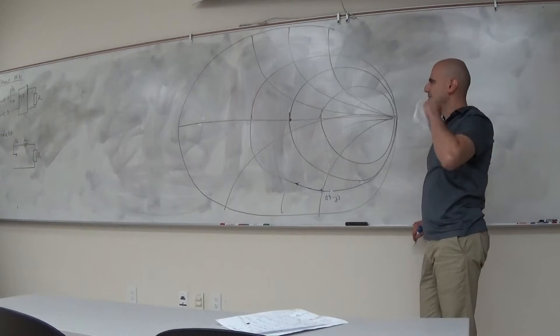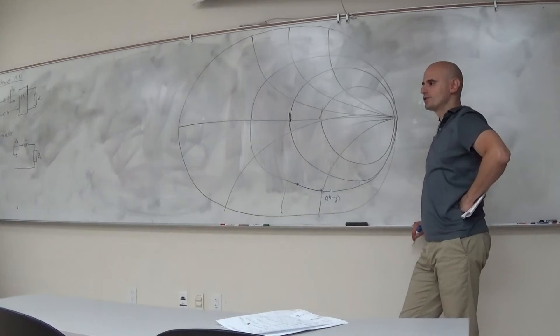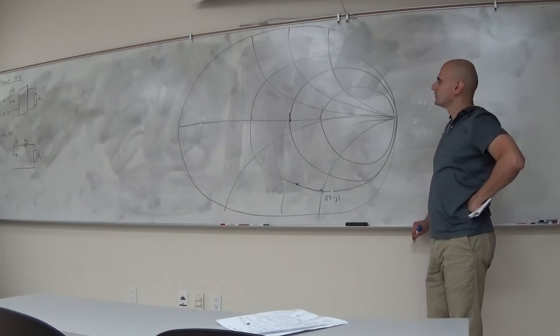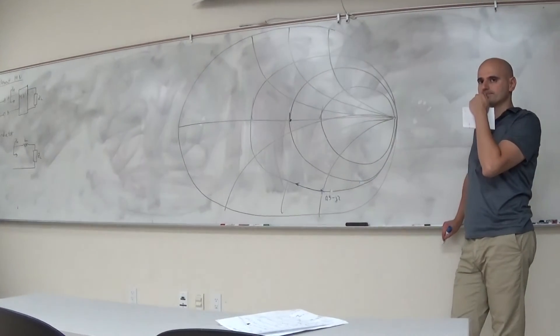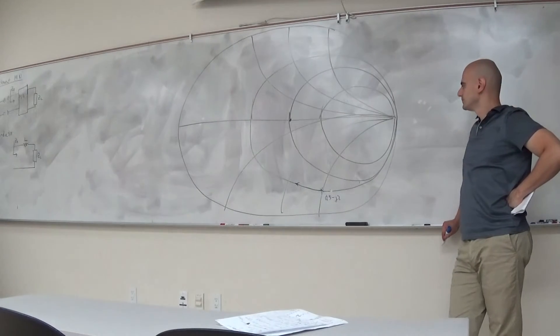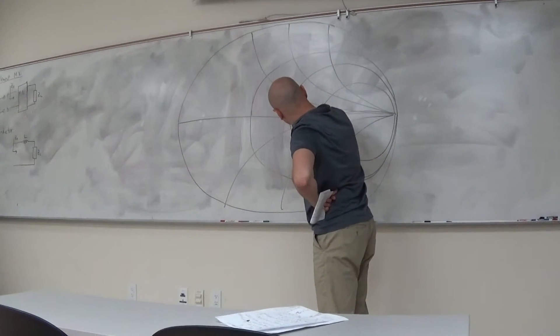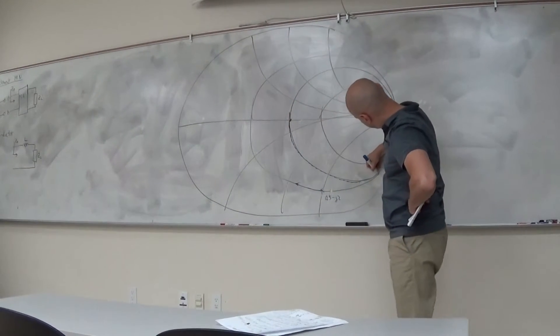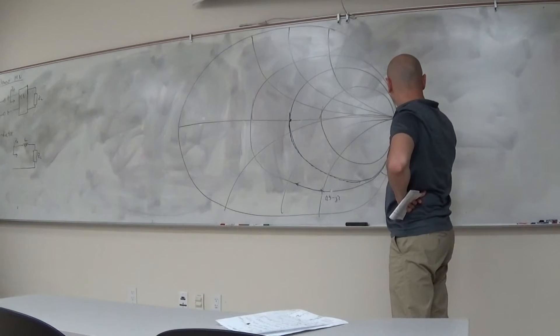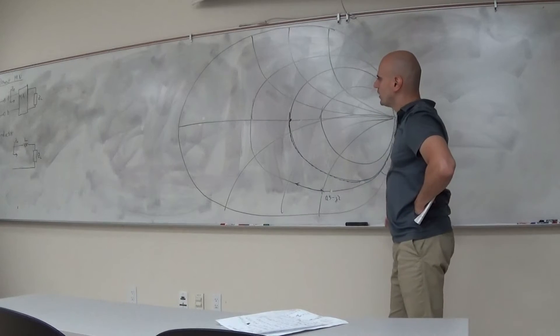So where can my load impedance actually be so that I can use an inductor to match? There's only a certain arc that's allowed for the load impedance such that I can use an inductor to bring it to the center. R equals to 1. Good. And would X be positive or negative? Negative. Yes. So it's this part of the circle here. So if my ZL is anywhere here, and this is by the way the 1 minus jX circle, if my ZL is anywhere here, then I can use an inductor to match it.